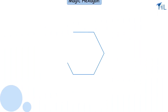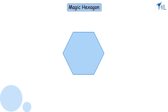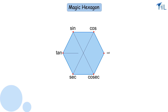First, let us mark the two sides of the hexagon. Write sin next to one side and cos next to the adjacent side. Now mark the rest of the sides: we will write cosec next to the side opposite to sin, and sec next to the side opposite to cos. Let us complete our hexagon with tan and cot — write tan next to this side and cot on the opposite side.